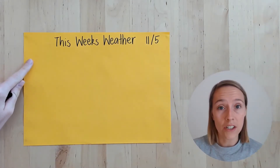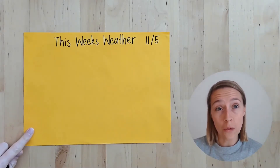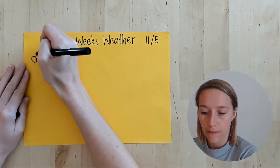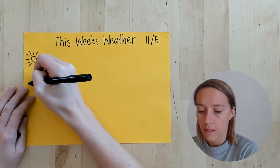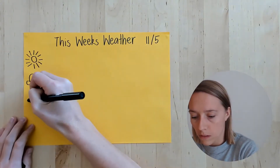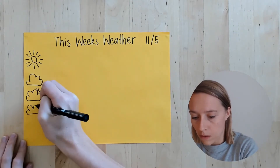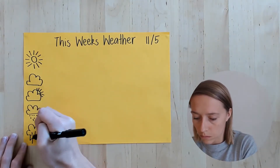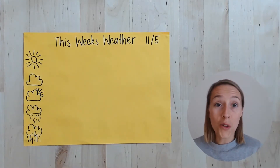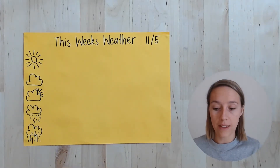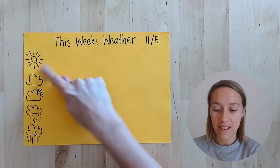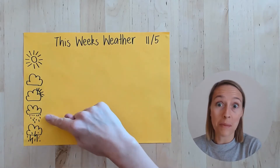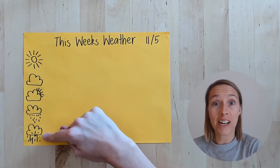Now down the side of the page I'm going to put all the different kinds of weather that I think I might see in the week. So I'm going to start with the sun. These are all the different kinds of weather we might see this week: it might be a sunny day, it might be cloudy, it might be cloudy but a little bit sunny, it might be rainy, or it might be really stormy.